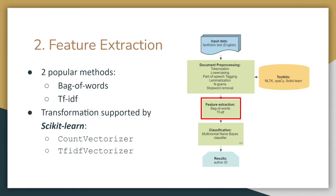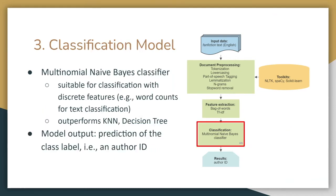Our second step is feature extraction. There are two popular methods: bag of words and TF-IDF. The transformation is supported by scikit-learn, with corresponding vectorizers being the count vectorizer and TF-IDF vectorizer. The third step is to train our classification model. The model we chose is Multinomial Naive Bayes classifier, which is suitable for classification with discrete features — such as word counts, word frequencies, or TF-IDF representations. It outperforms KNN and decision tree based on our previous trials, so we will mainly focus on that. The model output is a prediction of the class label, which is an author ID.